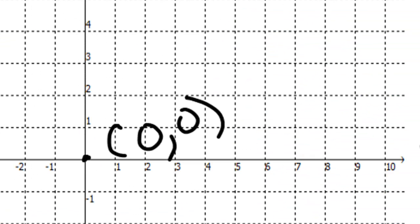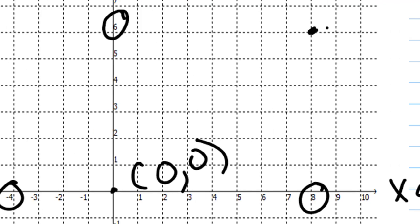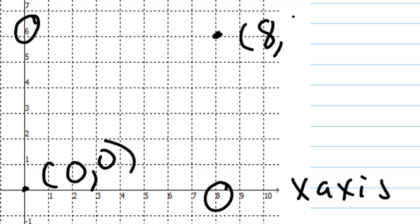Then we have 8 comma 6. So 8 would be the location on the x-axis—I'm going eight units to the right. Then 6 is the location on the y-axis, so I'm going six units up. Eight units to the right and six units up is right here—this is 8 comma 6.